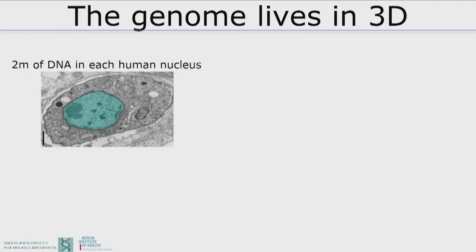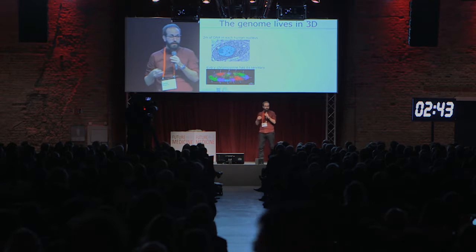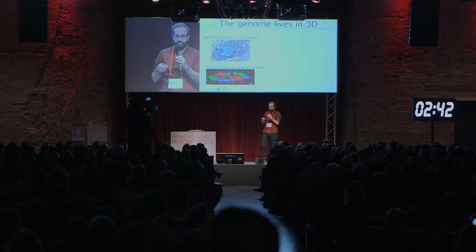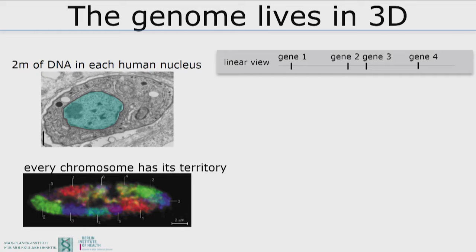I would like to remind you that in each of your nuclei you have two metres of DNA. And these two metres are not just crammed in there at random, but for a long time we've known that each chromosome occupies its own space, the so-called chromosome territory. Usually if you look at the genome, we think about the genome as linear with gene 1, 2, 3 in a row.